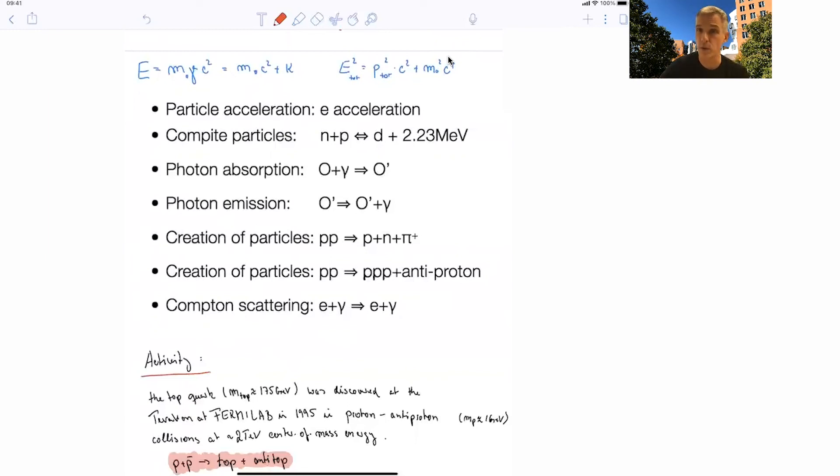And we looked at the total energy as being invariant, one of those invariants, as equal to the total momenta squared. The total energy squared is equal to the total momentum squared times c squared plus the mass, the rest mass squared times c to the fourth power. And then we went through a larger number of examples, from accelerating electrons to composite particles. We talked about deuteron, photon absorption and emission, the creation of particles, the creation of antiparticles, and the scattering of particles.